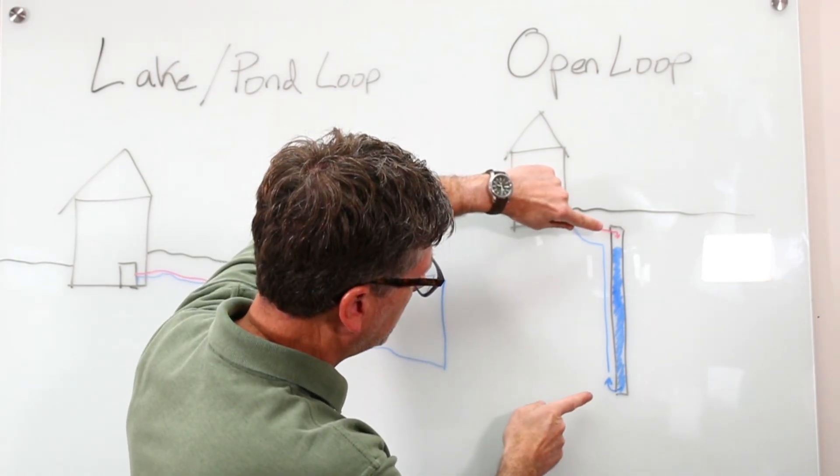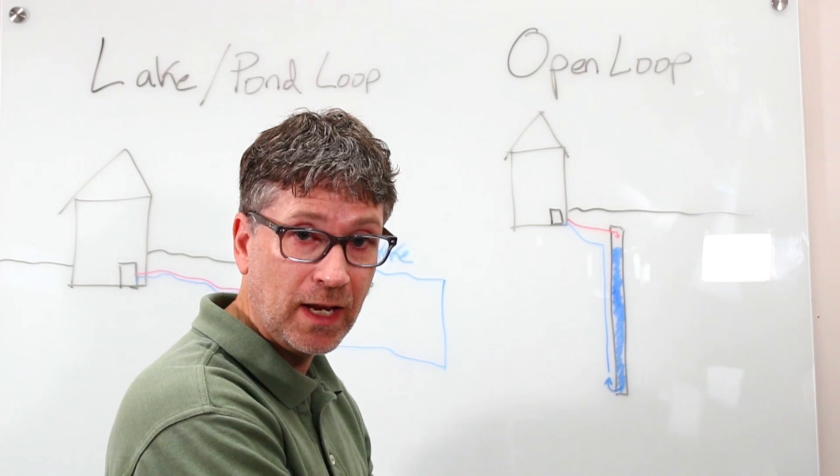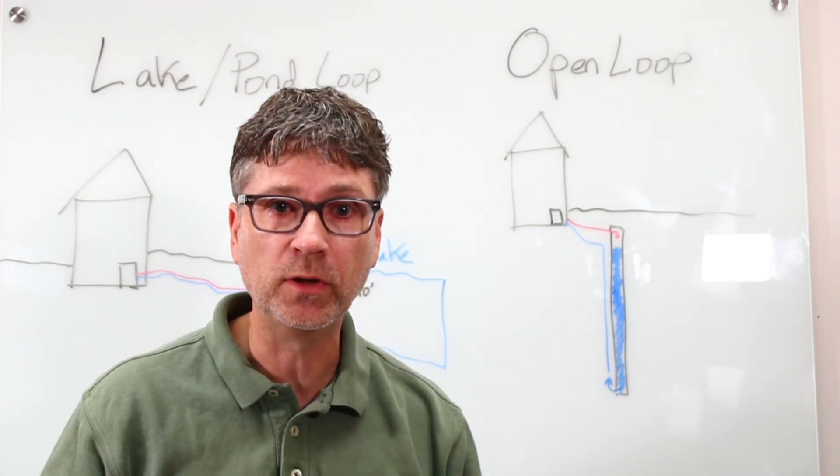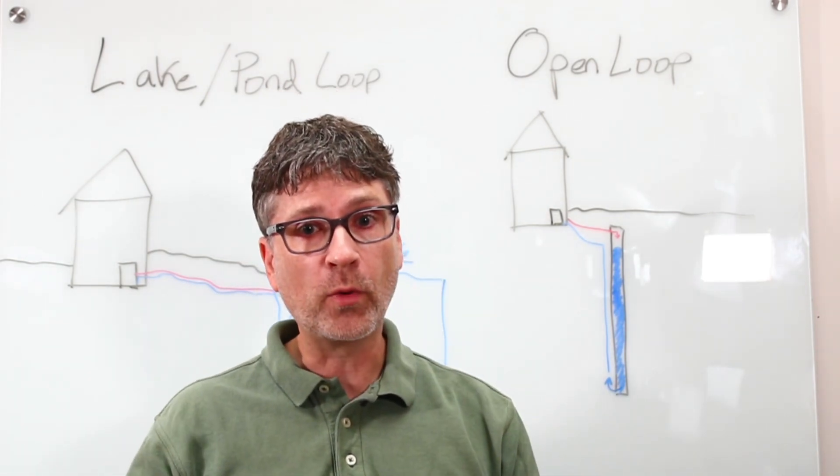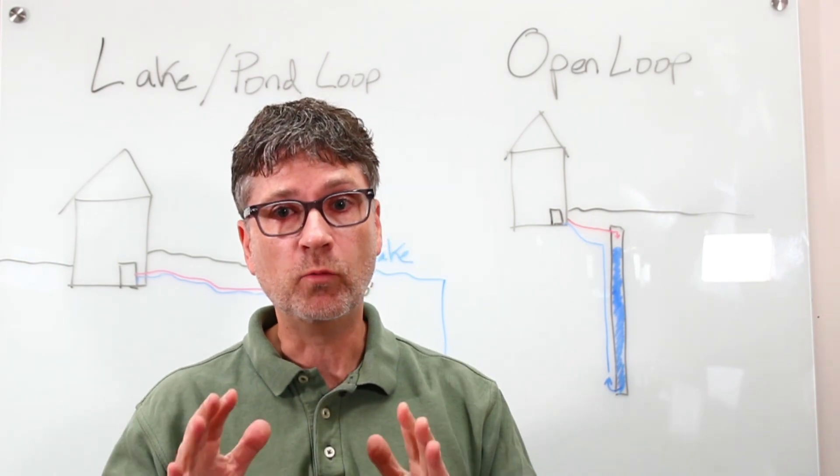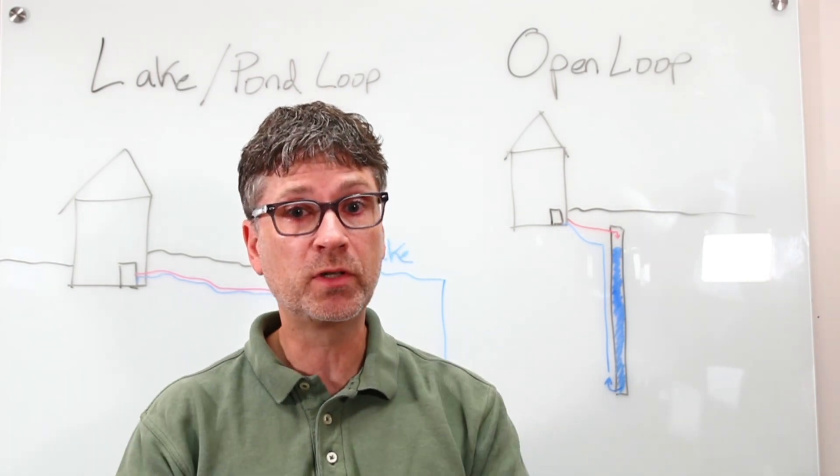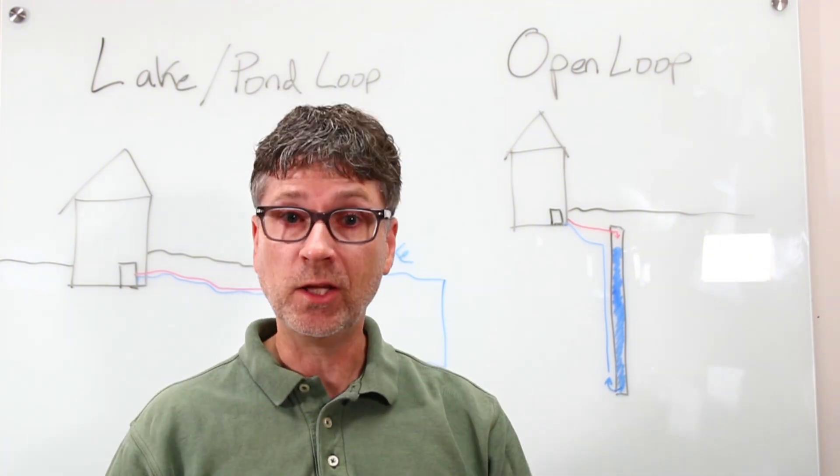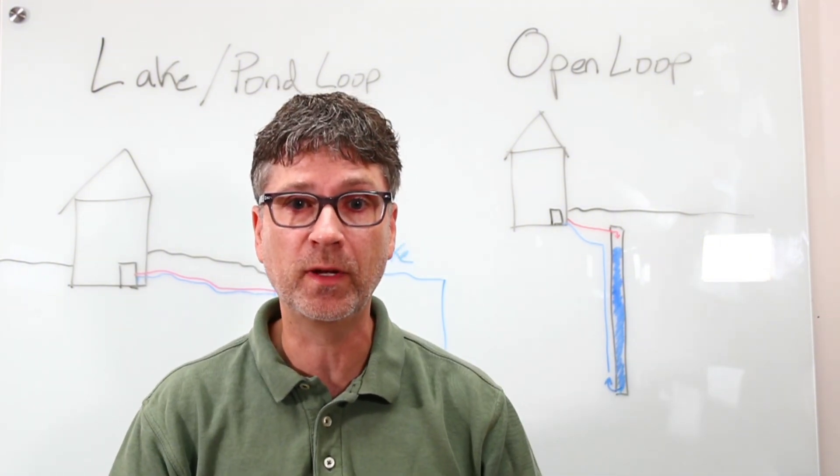Note how those pipes in my diagram here don't connect. It is, after all, an open loop system. Now the flow rate is really critical. You need 1.5 gallons per minute per ton. In a 3 ton system, for example, you would need 4.5 gallons per minute.